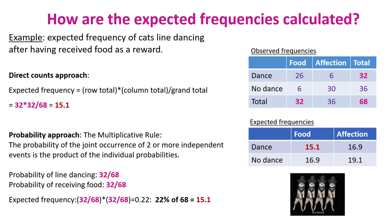We are clear on how to get the observed frequencies, but what about the expected ones? Let me show you. There are two ways to figure it out: the so-called direct count approach, which is a direct application of the chi-square formula, and the probability approach, which is a bit more intuitive. The direct count approach states that the expected frequency equals row total times column total divided by the grand total. For our example, that is 32 times 32 divided by 68, which equals 15.1 — the number of cats we would have expected to line dance after receiving food if there had been no relationship whatsoever between reward and likelihood of line dancing.